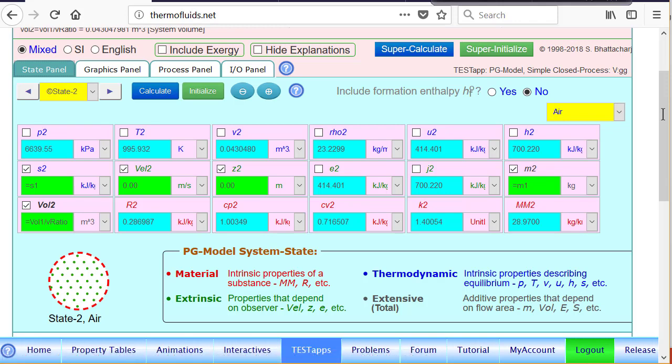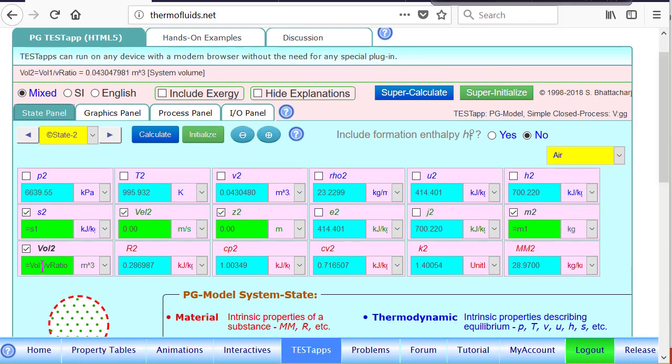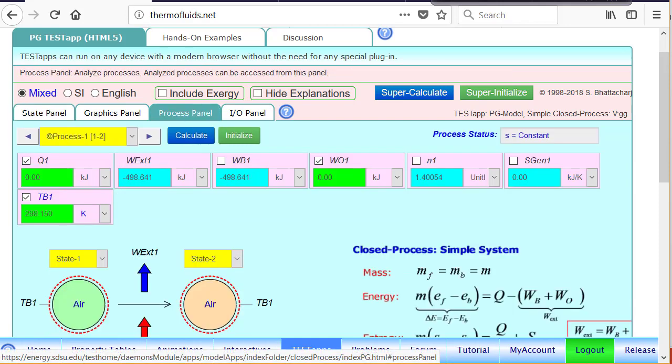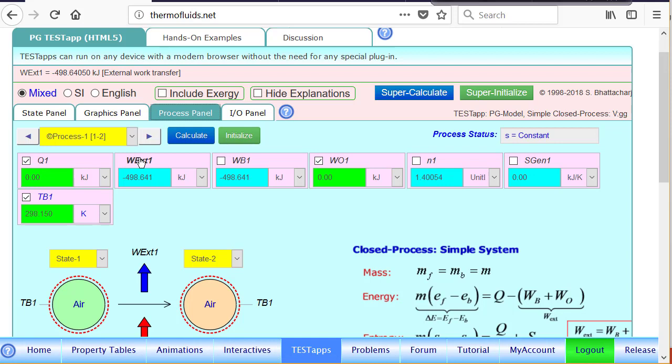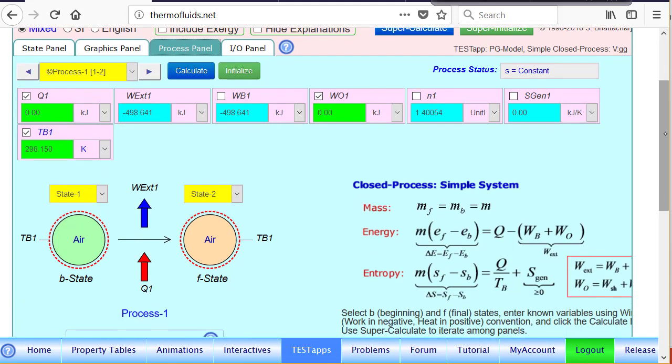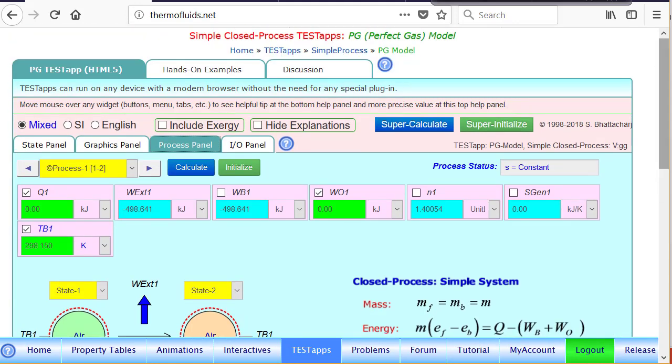If you go to the state panel and put the pointer over, you'll realize that the volume is now divided by 20 instead of 10. In the process panel, if you look at the work, it is 498. So no, it's not quite twice the amount of work transfer but less than that. Actually, in this isentropic process, even though the volume ratio is now 20 as opposed to 10.